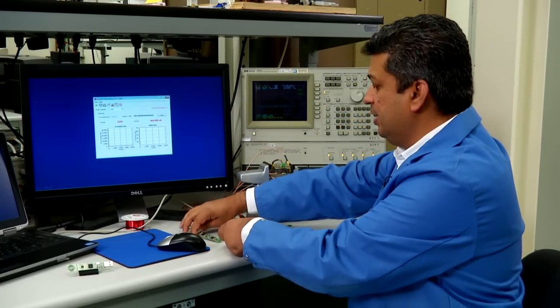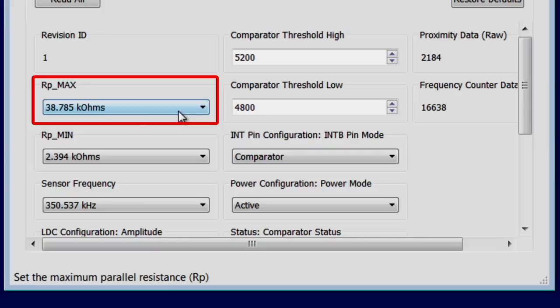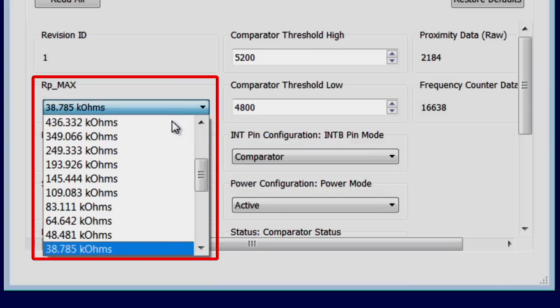So what I have here is Rp max setting. We have previously measured that the Rp max of this coil was 36 kilo ohm. We need to set the register value twice the measured value and the closest value to that is 83 kilo ohms.